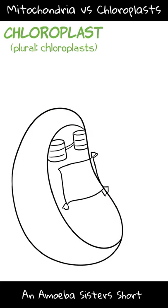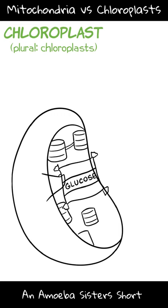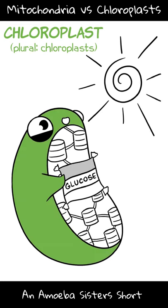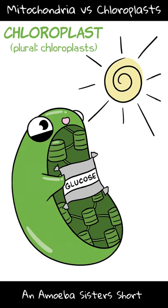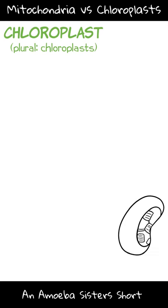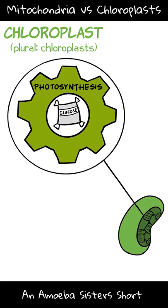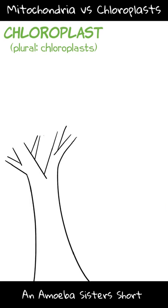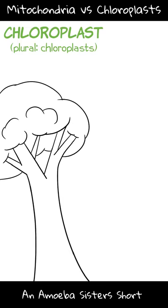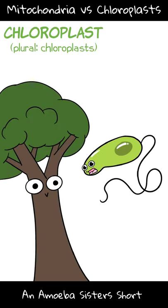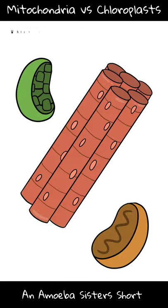Now chloroplasts — organelles that contain green chlorophyll — they use sunlight energy to make glucose, a sugar. Probably sounds familiar, right? Yes, they're the site of photosynthesis, and they're going to be found in photosynthetic eukaryotes like plants or photosynthetic protists.